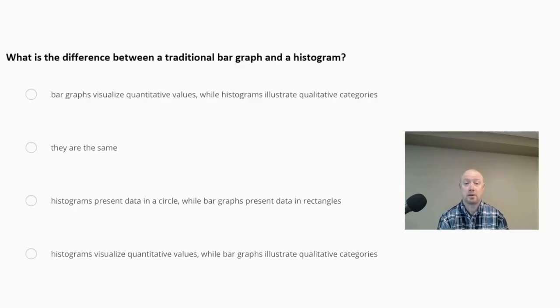What is the difference between a traditional bar graph and a histogram? Is it bar graphs visualize quantitative values while histograms illustrate qualitative categories? Is it they are the same? Is it histograms present data in a circle while bar graphs present data in rectangles? Is it histograms visualize quantitative values while bar graphs illustrate qualitative categories?